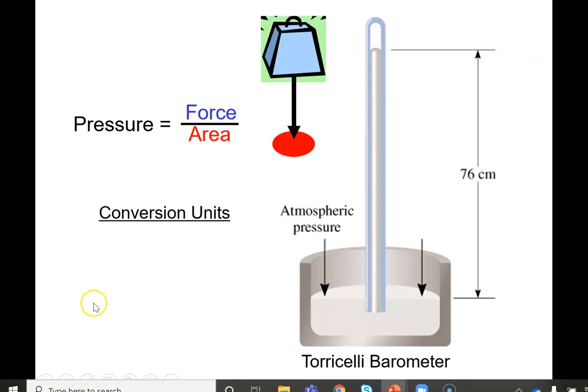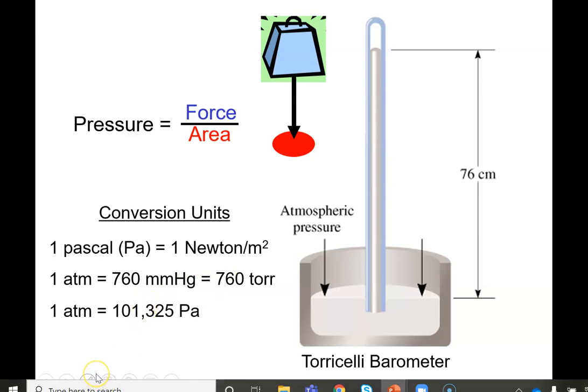We won't use psi. We will use atmospheres, pascals, millimeters of mercury, or possibly torr. Knowing some of these conversion factors is very helpful. One atmosphere is 760 millimeters of mercury is 760 torr. One atmosphere is 101 kilopascals. Those are very useful ones to know because you will need to match your units one to another so that they can cancel out appropriately.